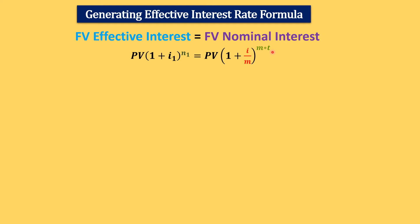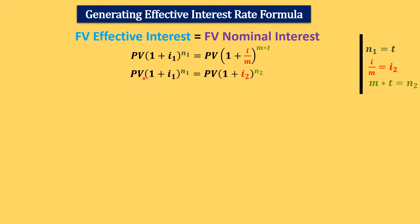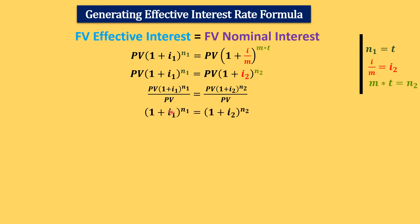Before simplifying, I'll relabel some variables: n₁ becomes t for the time period, i/m becomes i₂, and m×t becomes n₂. So we have PV × (1 + i₁)^t = PV × (1 + i₂)^n₂. Dividing each side by PV, we're left with (1 + i₁)^n₁ = (1 + i₂)^n₂.